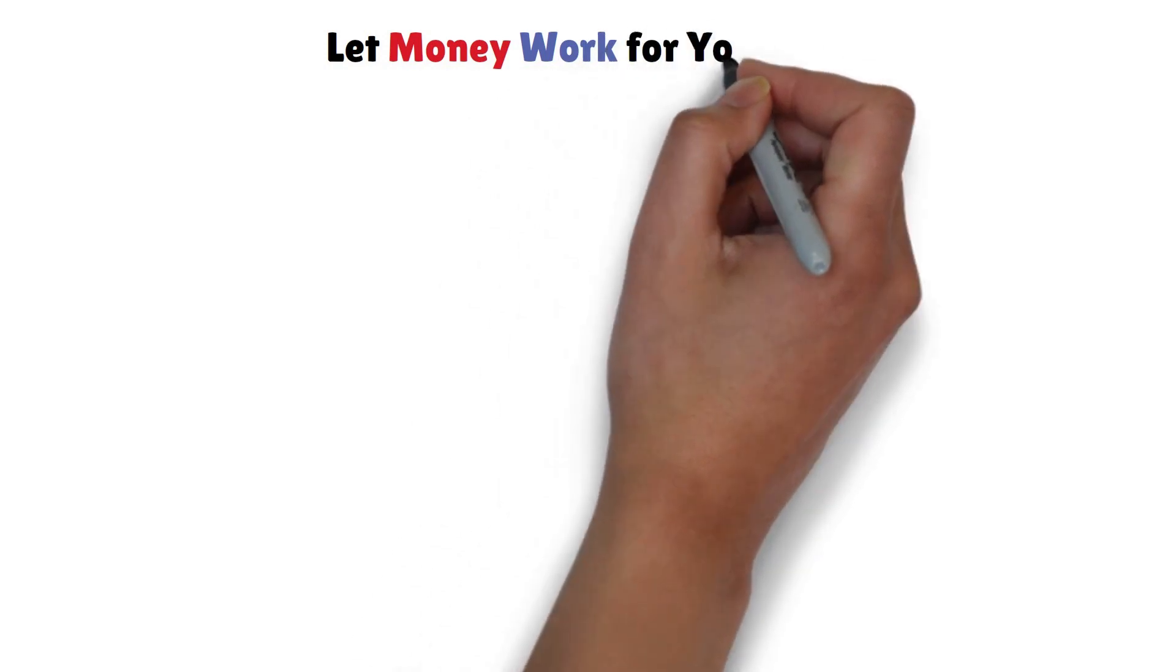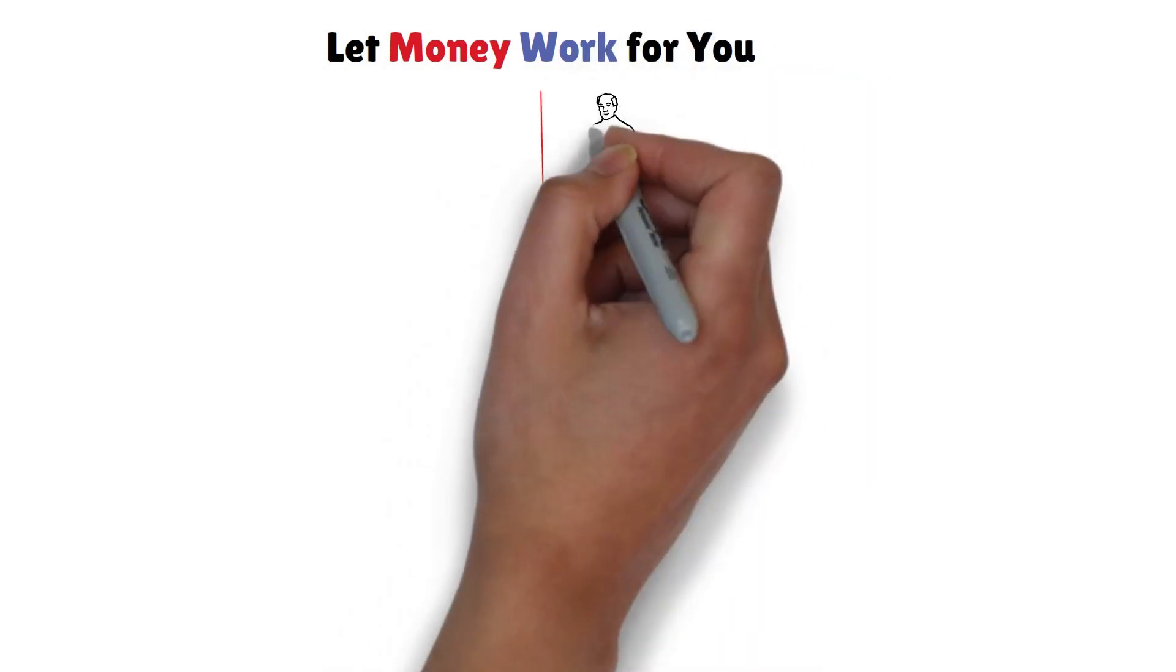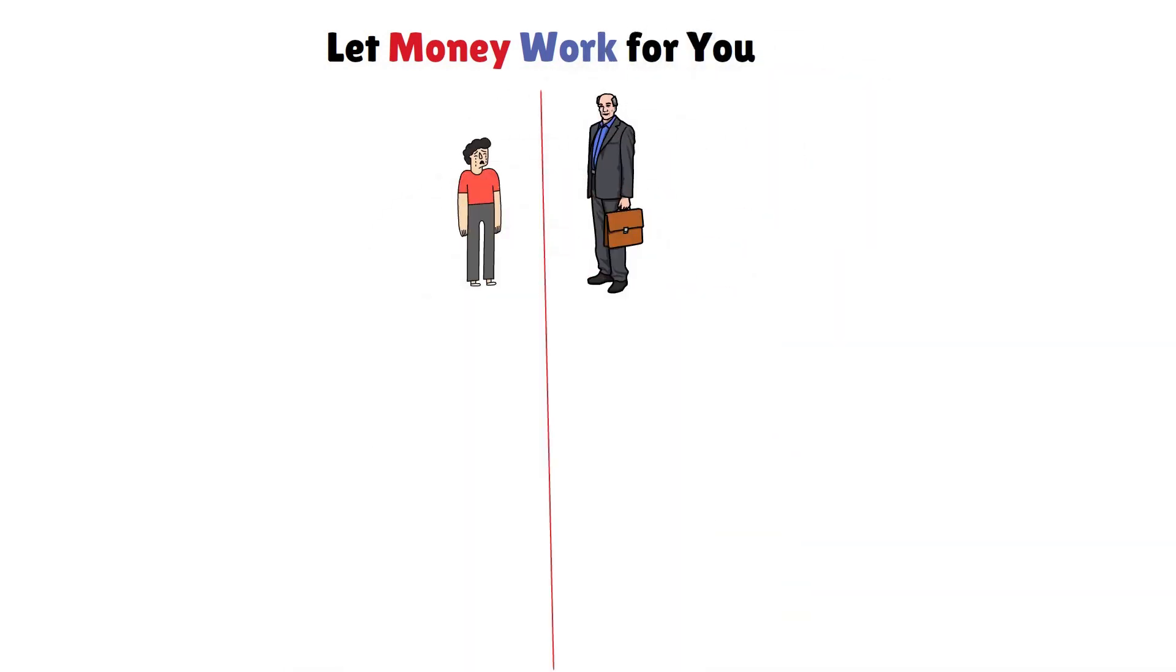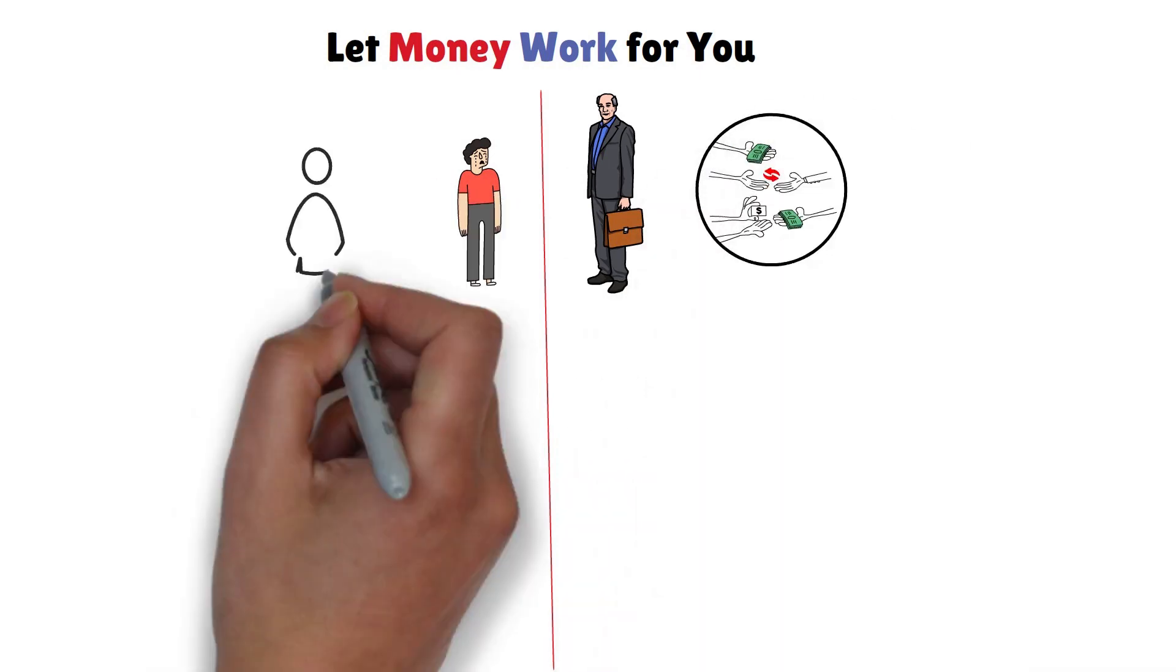Rule 1: Let money work for you. This is a fundamental difference between the wealthy and the poor. The rich make their money work for them, while the poor work for their money.